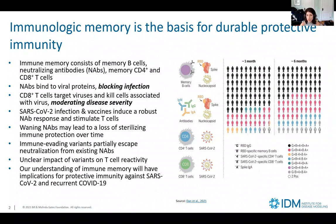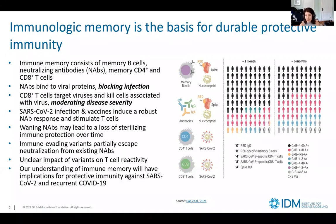SARS-CoV-2 infection and vaccines induce quite a robust neutralizing antibody response and stimulate T cells, which works to prevent infection and moderate disease severity. However, waning neutralizing antibodies may lead to a loss of sterilizing immune protection over time. The introduction of immune-evading variants that partially escape neutralization from existing NAbs really threatens existing immunity, either from natural infection or vaccines. There is an unclear impact of these variants on T cell reactivity, but evidence suggests T cells can still moderate disease severity.